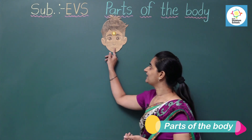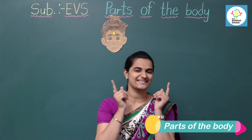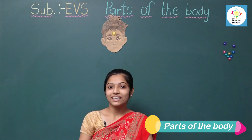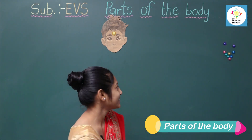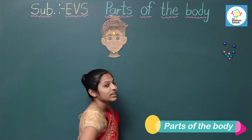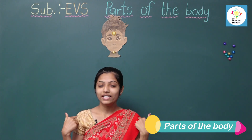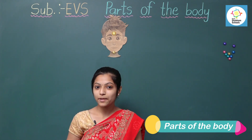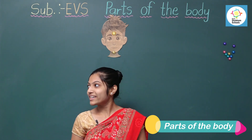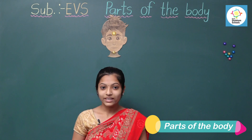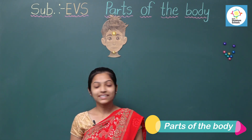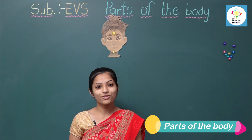Next, we have two lips and two cheeks and one chin. This is a neck. Neck is a part of the body that joins the head to the shoulder. Neck also helps us move side to side — right and left, up and down. With the neck, we can move our face in all directions.